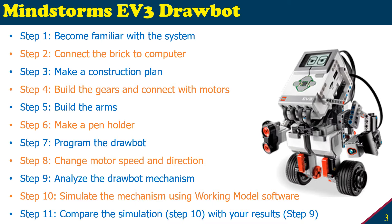Here is an example of how to make a drawbot using a Lego Mindstorms EV3 kit. These are the basic steps: first, familiarize yourself with the system, then learn how to turn it on and off and connect it to the computer. Next, make a construction plan for the mechanism so it can hold a pen and rotate — for that we need some gears to connect with the motor. Then build the arm that will hold the mechanism, and finally make a pen holder to draw.